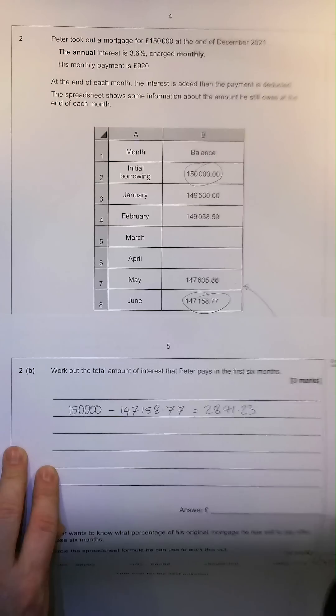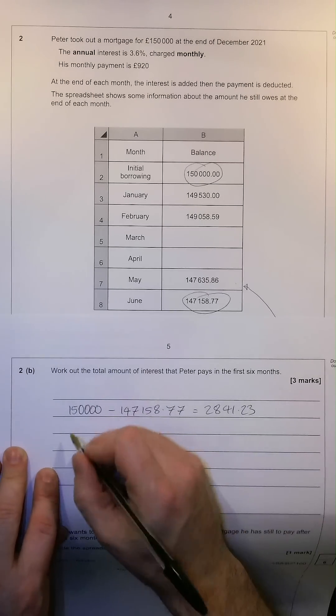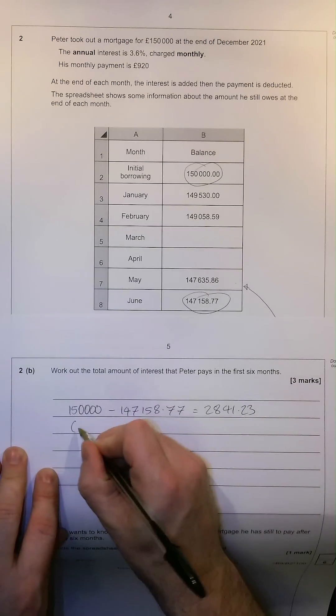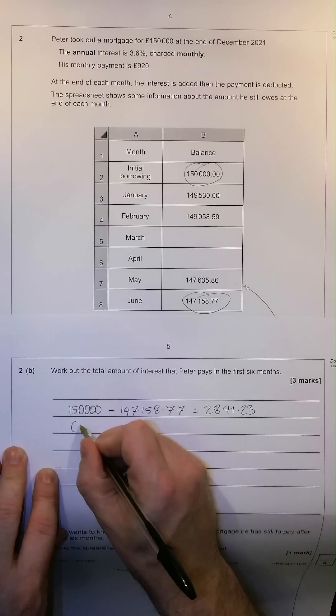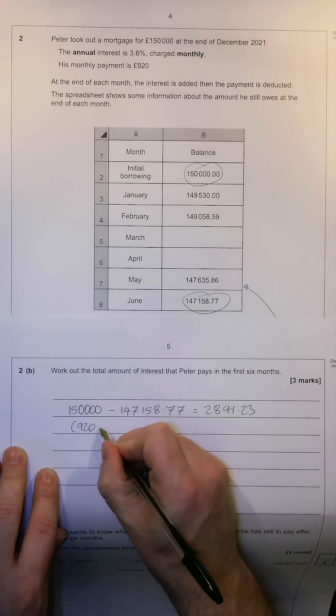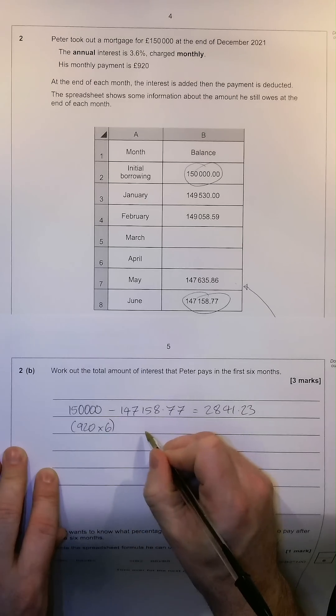So, what do we do now? Well, we take that number. But remember that we have already paid £920 over the last six months, each and every month.